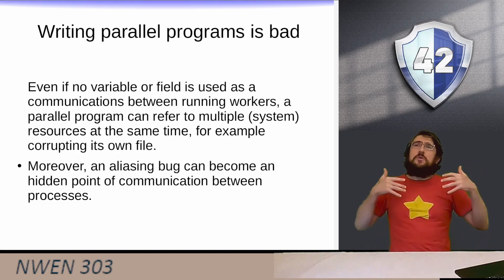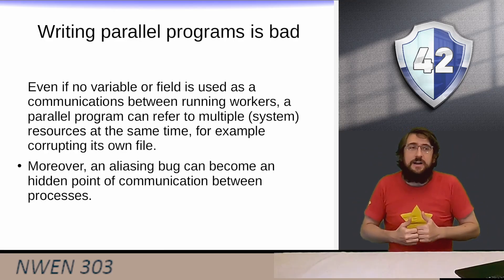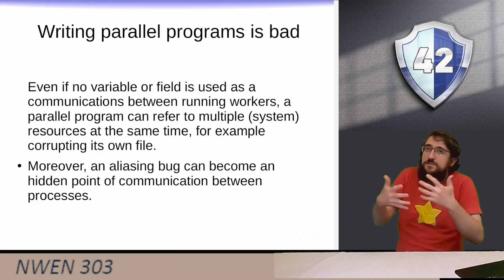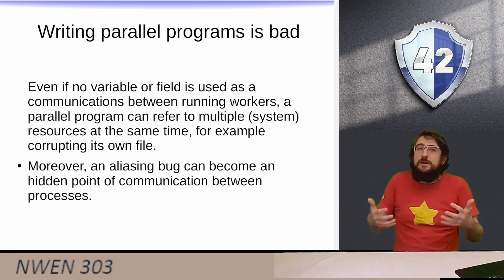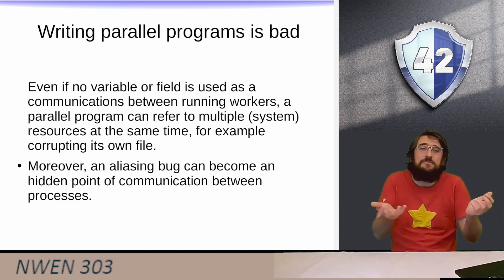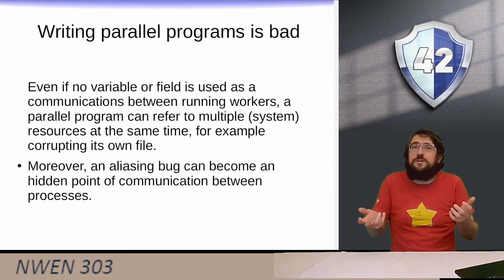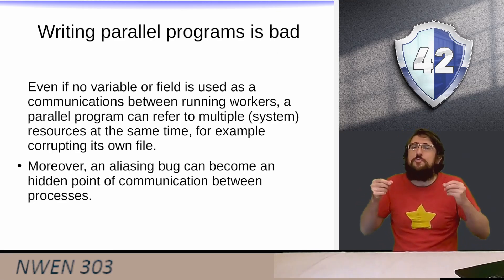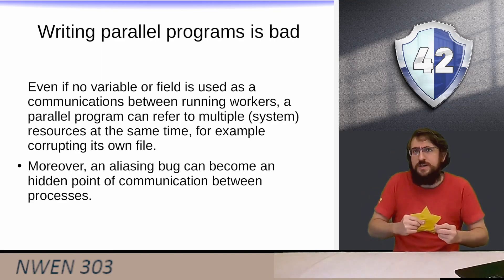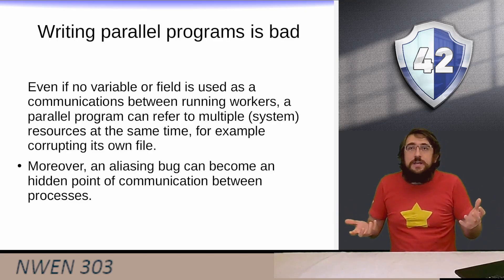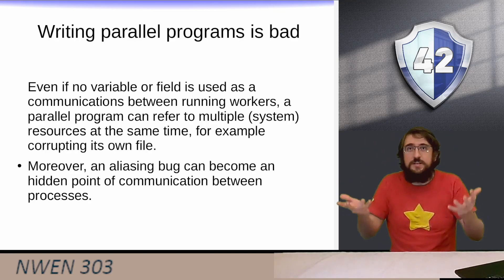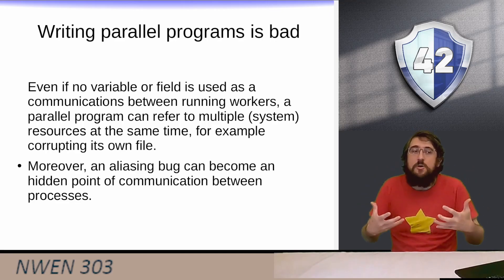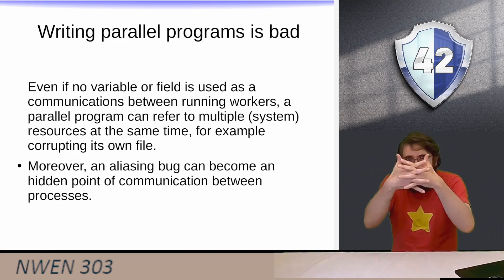Going to the more extreme statements: writing parallel programs is bad. Even if no variable or field is used as communication between running workers, a parallel program can still refer to multiple system resources at the same time — for example, you could corrupt your own file. Moreover, even if you think there is no communication between running workers, maybe you are wrong. If there is an aliasing bug you haven't considered properly, it may manifest as a hidden point of communication between workers, threads, or processors.